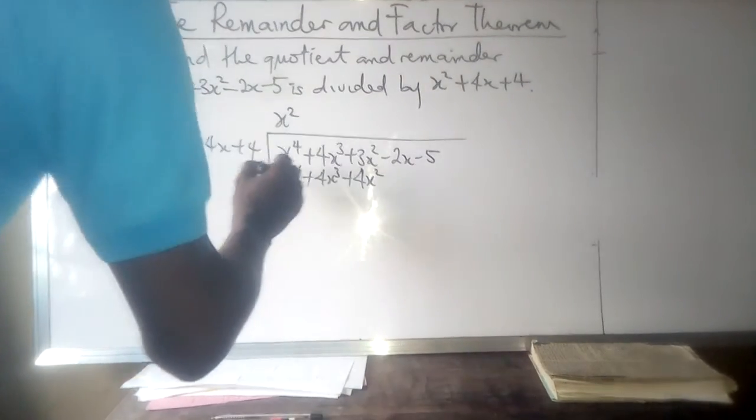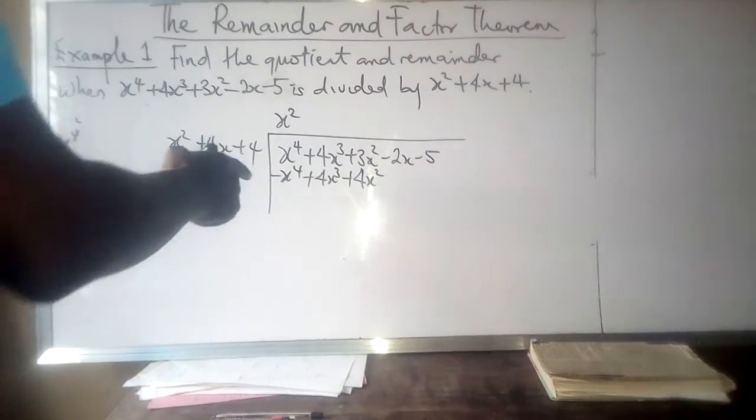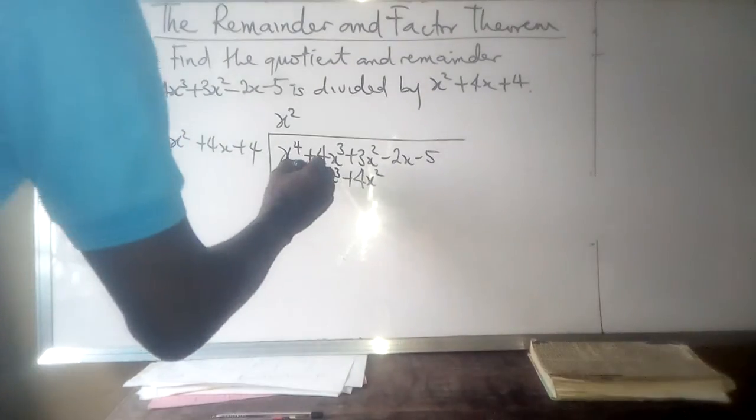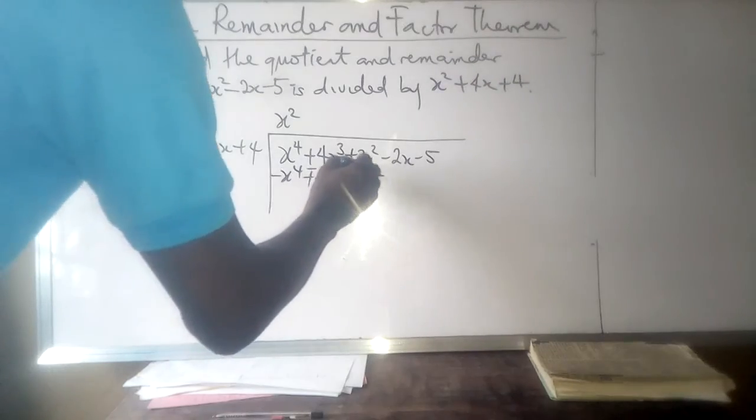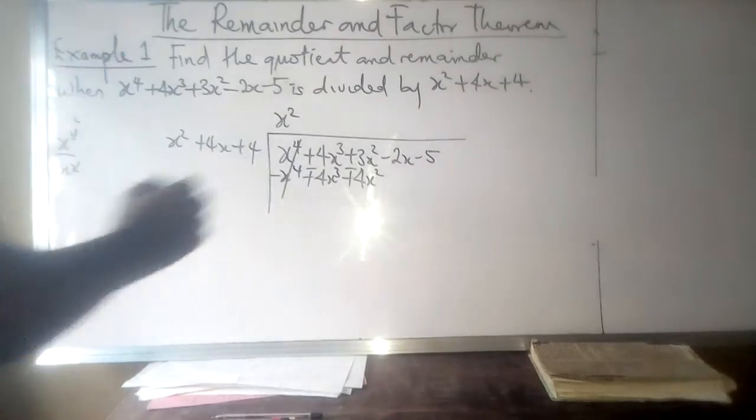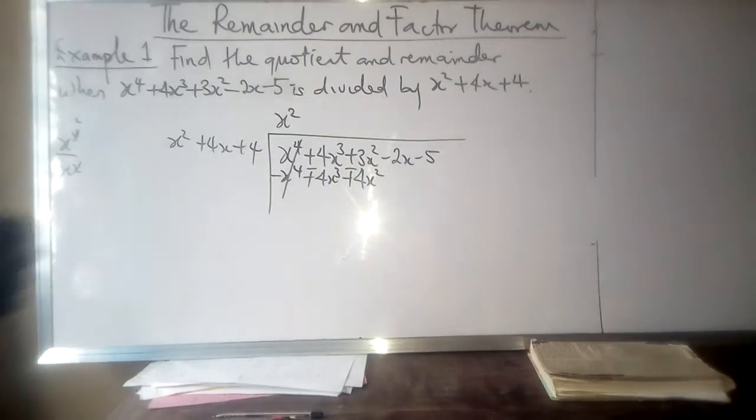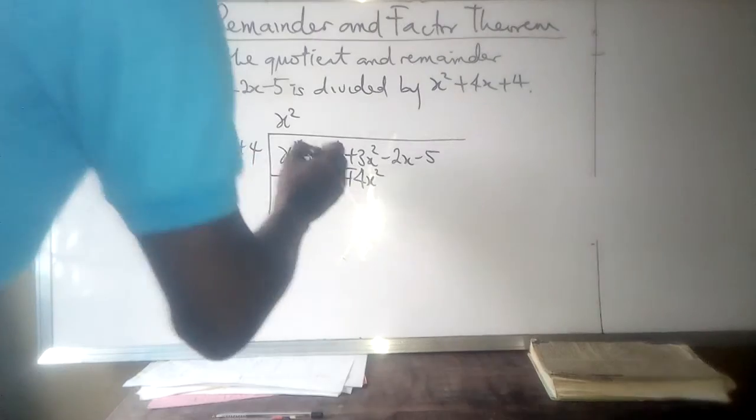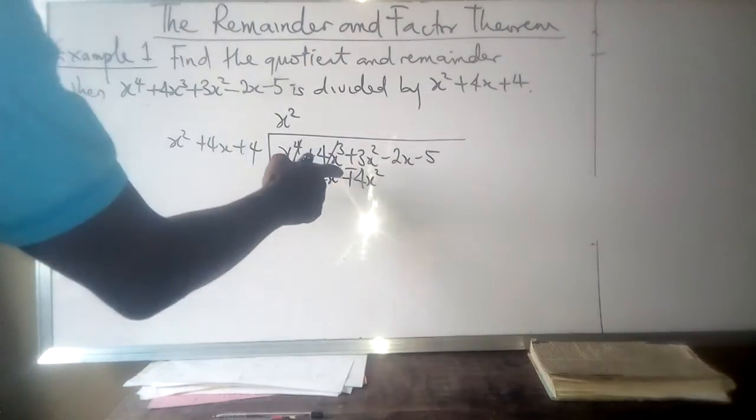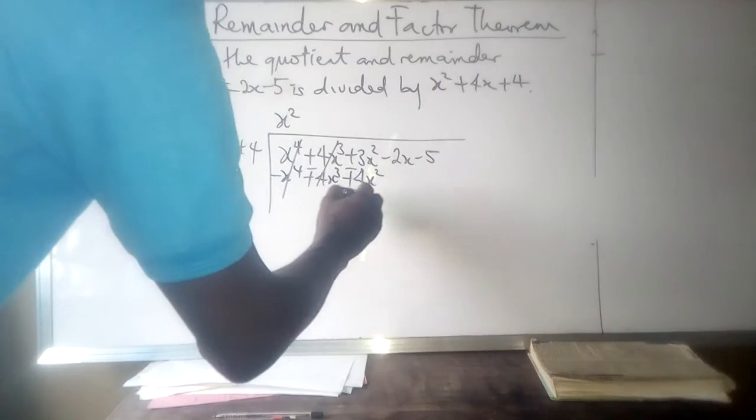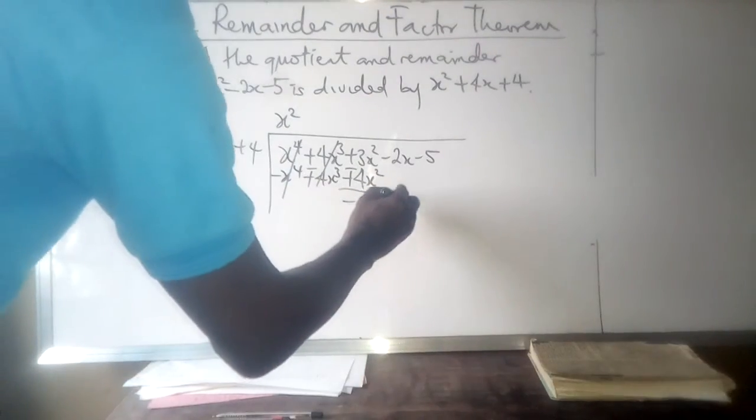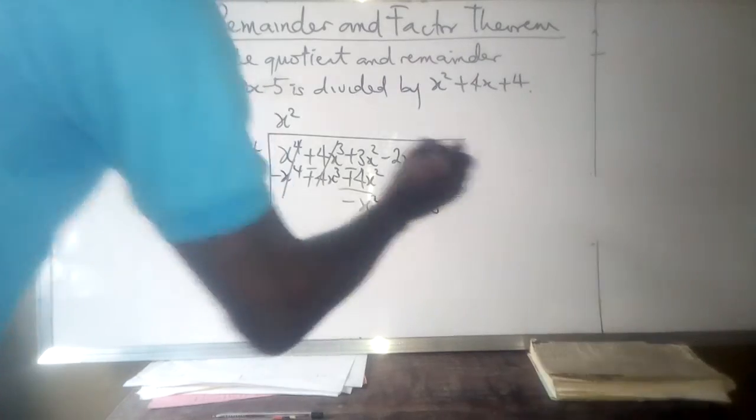We introduce a subtraction sign, which affects all the signs in the expression. x⁴ minus x⁴ cancels out, 4x³ minus 4x³ equals zero, and 3x² minus 4x² gives -x². Then we bring down the remaining terms: -2x - 5.